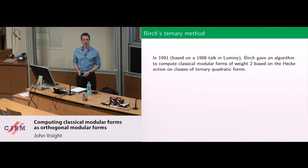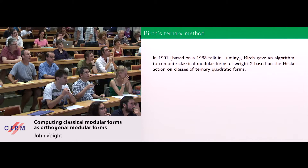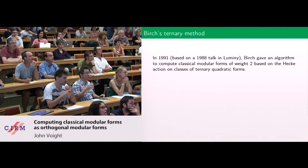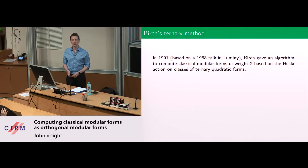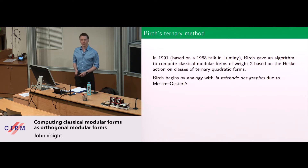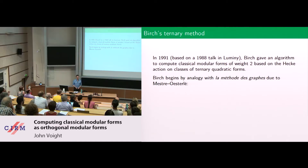In 1991, based on a 1988 talk here in Luminy, Birch gave an algorithm to compute classical Modular Forms of weight 2, based on a Hecke action on ternary quadratic forms, which is maybe an unusual place to see things like elliptic curves and the like, but they're really there. Birch was motivated by an analogy to la méthode de graph — for those who don't speak French, that translates to the method of graphs.